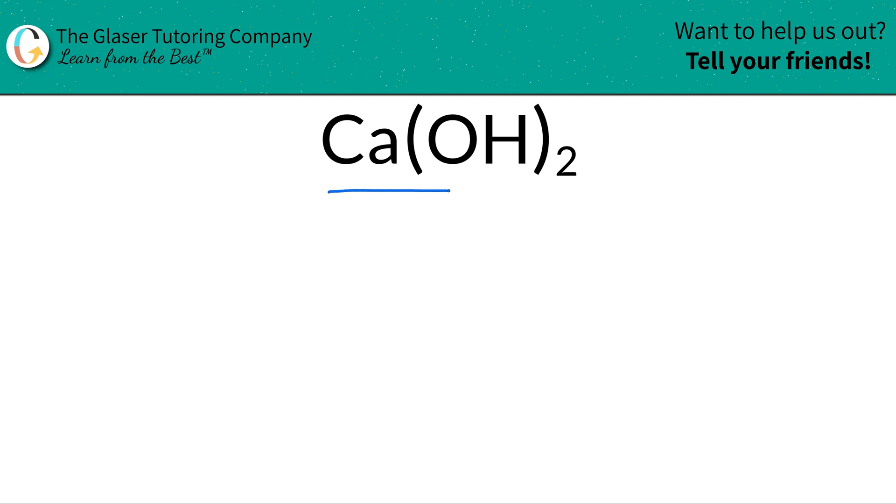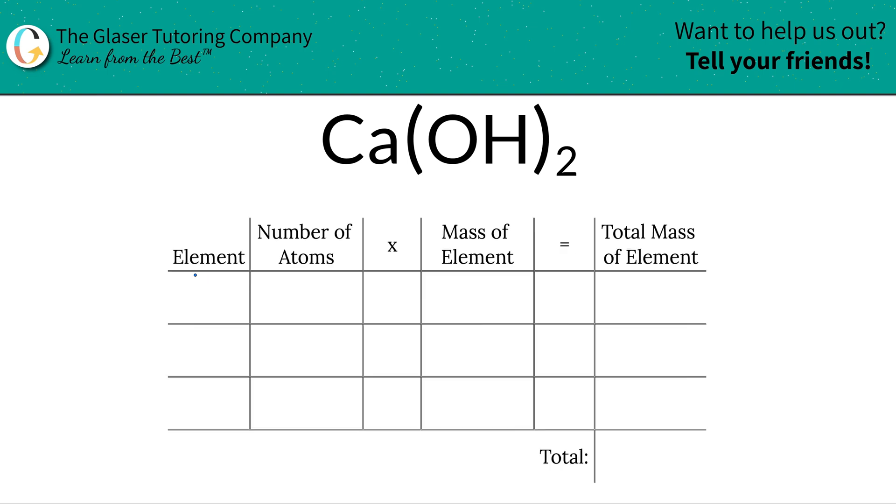Are you wondering what the molecular mass of calcium hydroxide is? You must be in school then. Let's use this table to help us organize our thoughts to solve that problem. So the first thing is we're going to identify the elements in the compound, right? So we have calcium Ca, we have oxygen O, and we have hydrogen H.